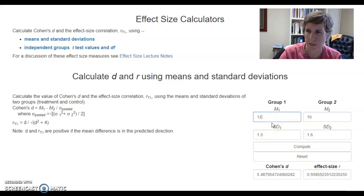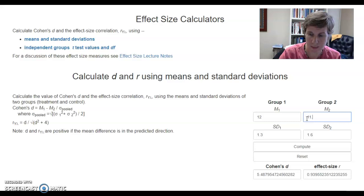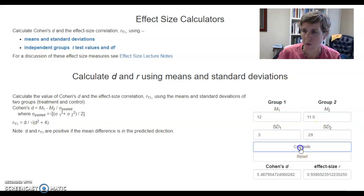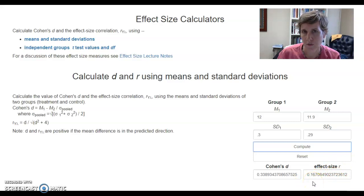Let's go back to the other example. I said 12, and I think I put it at 11.9. We had 0.3 and we had 0.29, and I'm going to compute that. So here, my effect size when I look at the Pearson correlation coefficient is 0.16. So that's a very small effect. That's using Pearson correlation rather than Cohen's d.